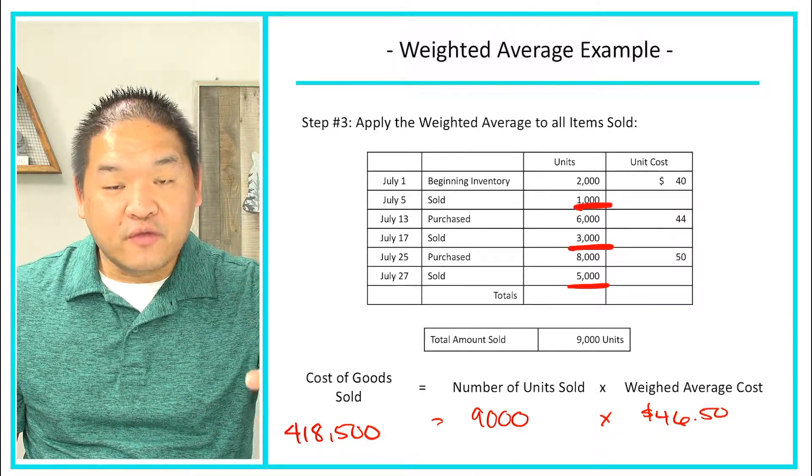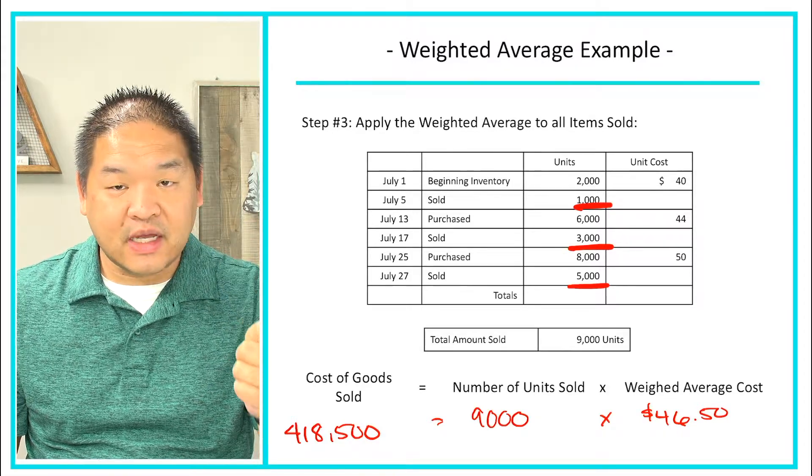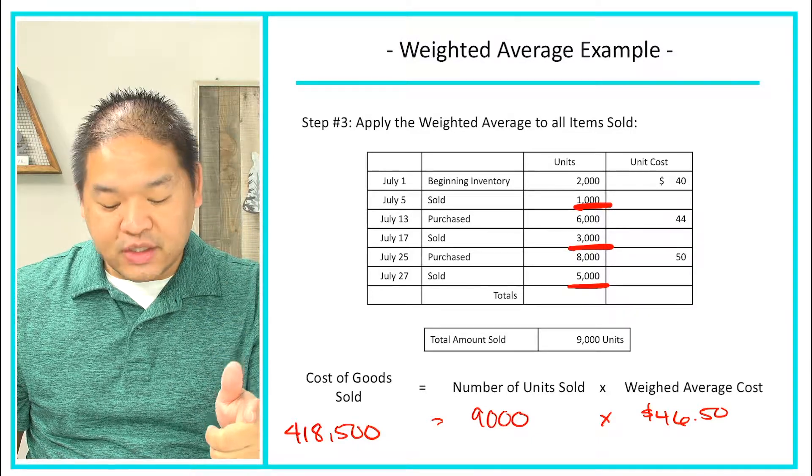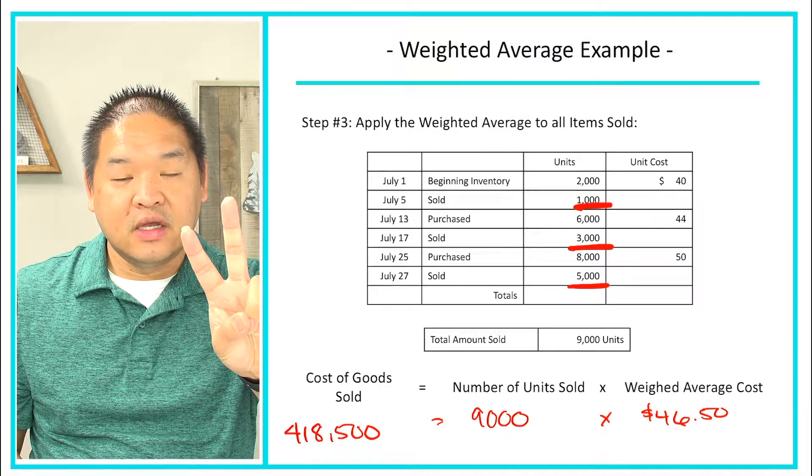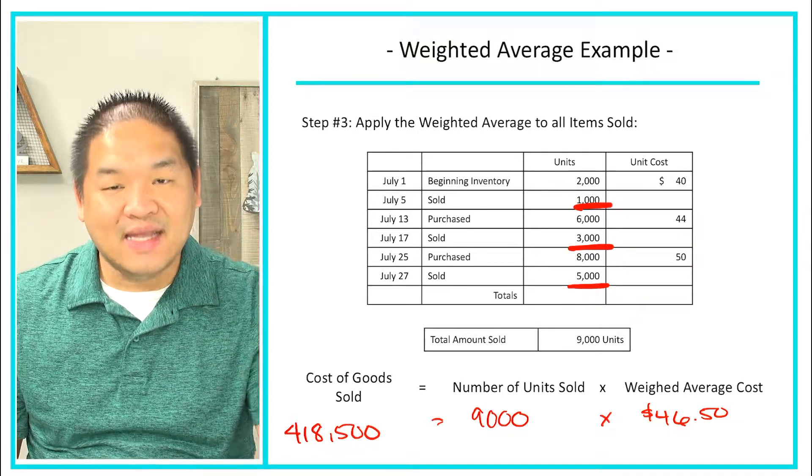Now moving on to step number four, we need to calculate our ending inventory. So we know what our goods available for sale are, $744,000. We know what our cost of goods sold is, $418,500. Those are two things, two of the three things that the question is asking for us. The last one is the ending inventory.